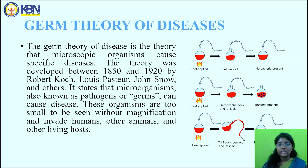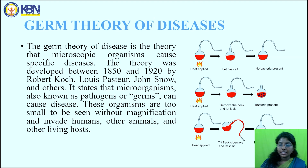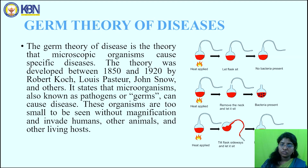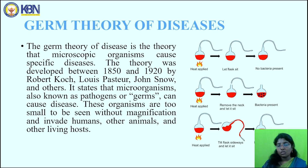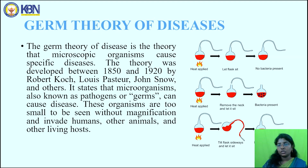Next, the germ theory of diseases. The germ theory of diseases is the theory that microscopic organisms cause specific diseases. The theory was developed between 1850 and 1920 by Robert Koch, Louis Pasteur, John Snow, and others. It states that microorganisms — also known as pathogens or germs — can cause disease. These organisms are too small to be seen without magnification and invade humans, other animals, and other living hosts.